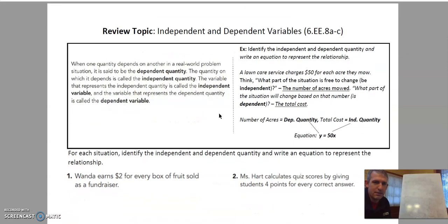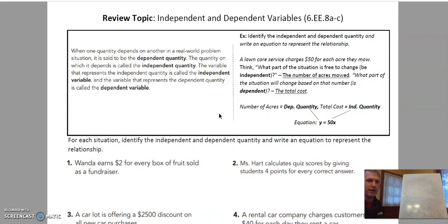So the first page in week 7 is independent and dependent variables. We talked about this earlier this year. Let's review. When one quantity depends on another in a real world problem situation, it is said to be the dependent variable. The quantity on which it depends is called the independent quantity. The variable that represents the independent quantity is called the independent variable, and the variable that represents the dependent quantity is called the dependent variable.